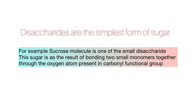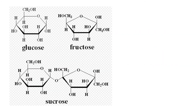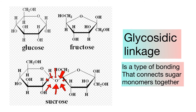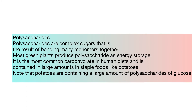Disaccharides are formed by bonding two small monomers together. For example, sucrose is a disaccharide formed by bonding fructose and glucose through the oxygen atom present in the carbonyl functional group. The bond that connects these two monomers is called a glycosidic linkage — this type of bonding is specific to sugars.